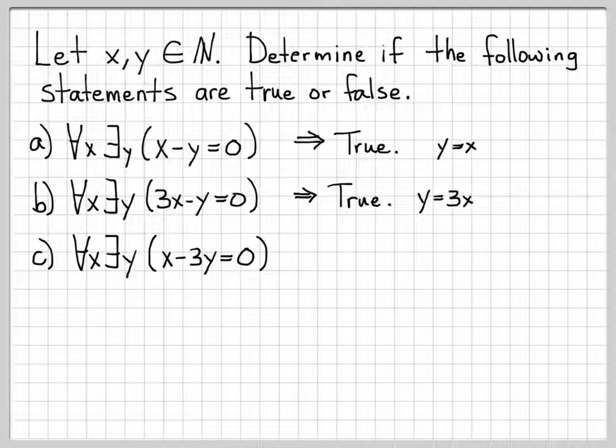But what about when x equals 1? I need 1 minus 3y to equal 0. The only way that can happen is if y is equal to a third, and y equal to a third is not a natural number. So there are definitely cases where the value for y that I need is not a natural number. So this is a false statement. This is not true.